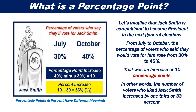Let's imagine that Jack Smith is campaigning to become president in the next general elections. From July to October, the percentage of voters who said they would vote for him rose from 30% to 40%. That was an increase of 10 percentage points.